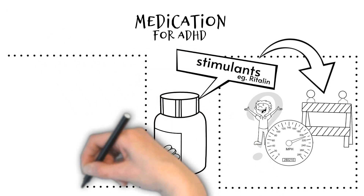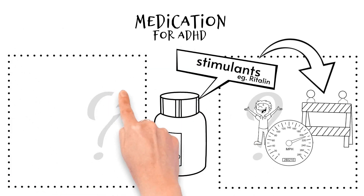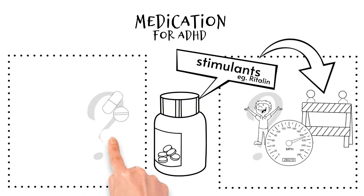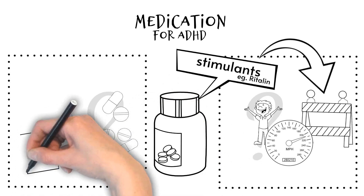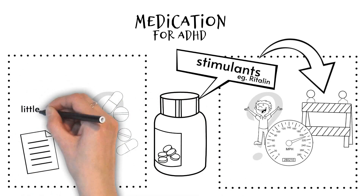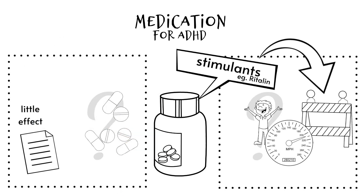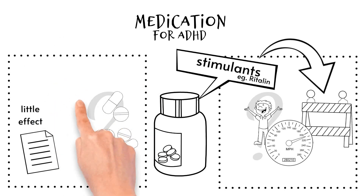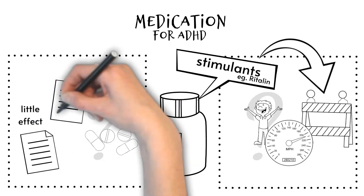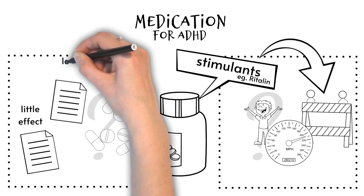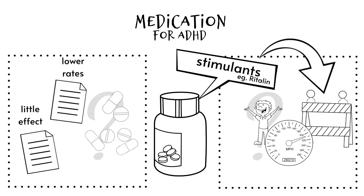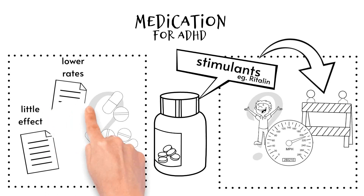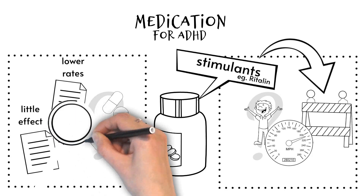A common myth is that ADHD medications can lead to substance misuse in later life. However, there is little evidence to suggest that this is the case. Some studies have reported that stimulant medication has little effect on the prevalence of substance misuse, while other studies suggest that treating ADHD with stimulant medication is associated with lower rates of substance misuse. Importantly, there is no evidence to suggest that stimulant medication increases the risk of substance misuse.